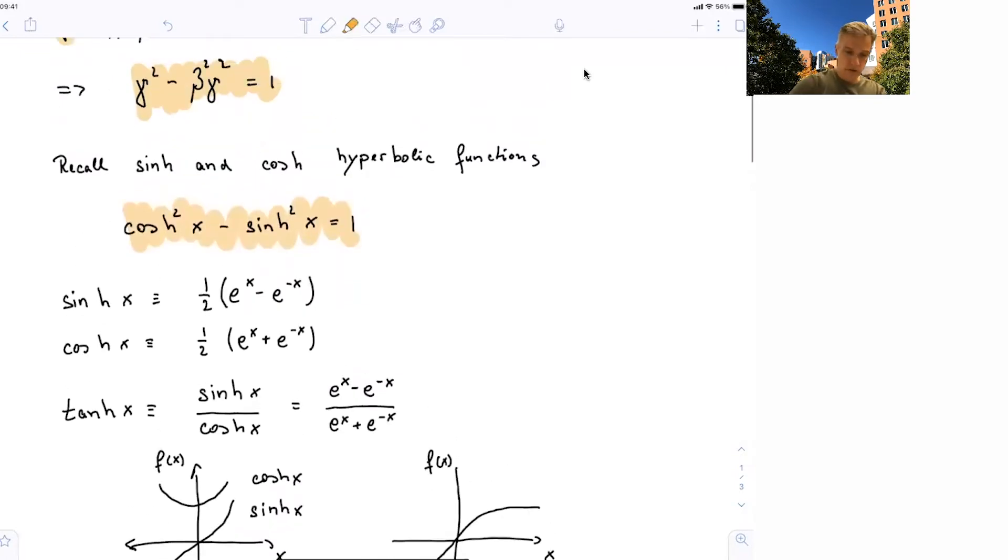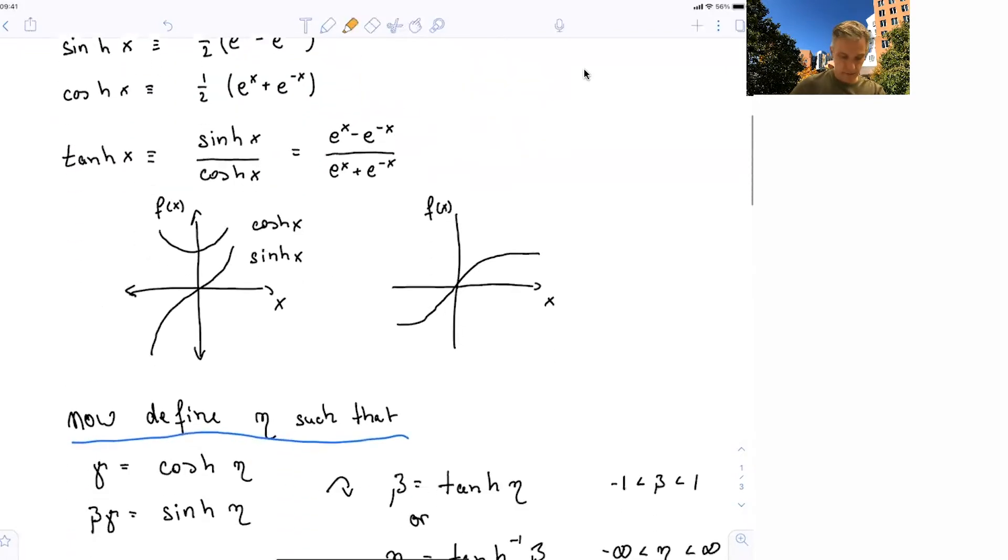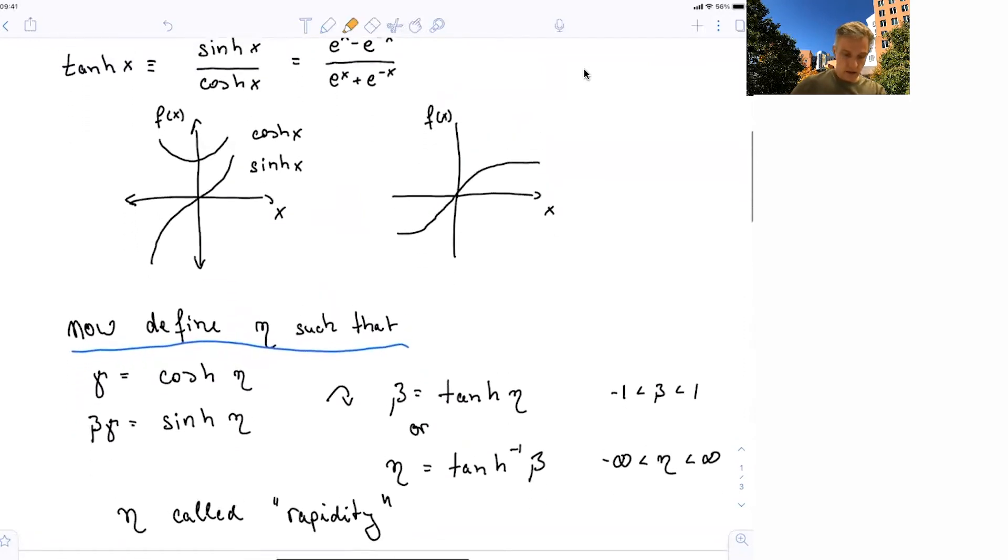But we want to come back to those two equations looking very much the same, so we can define now eta, the rapidity, as gamma equals cosh eta, and beta gamma equals sinh eta. So you basically have this rapidity, which is a measure of how much the system is boosted. You can then solve this again for beta equals tanh eta.